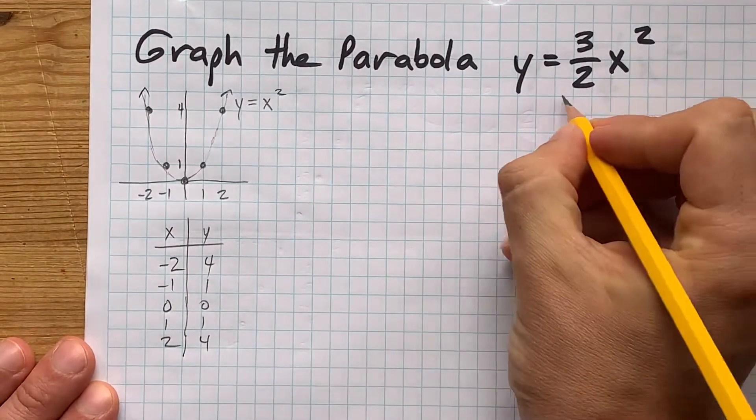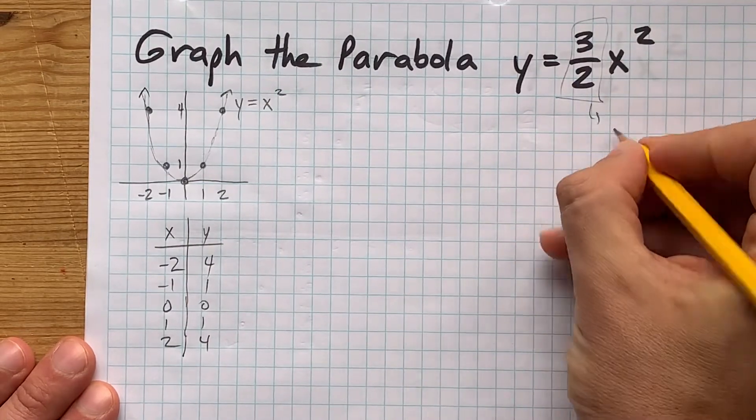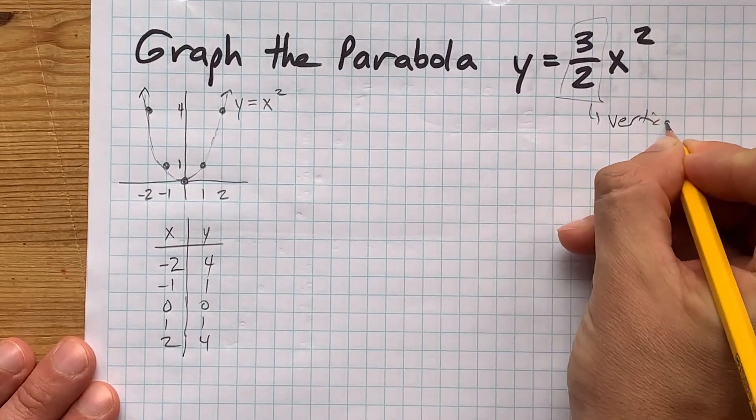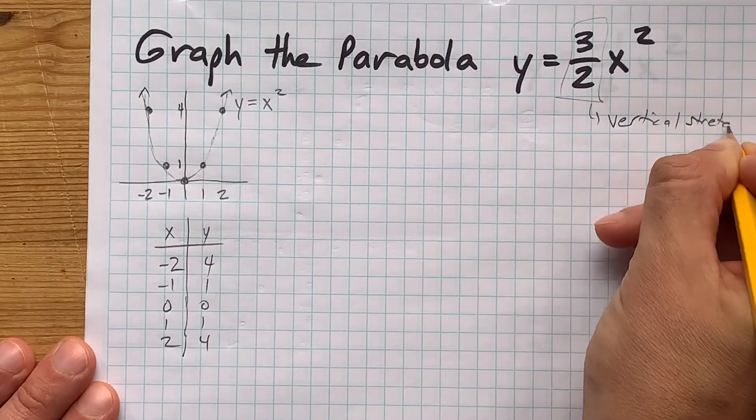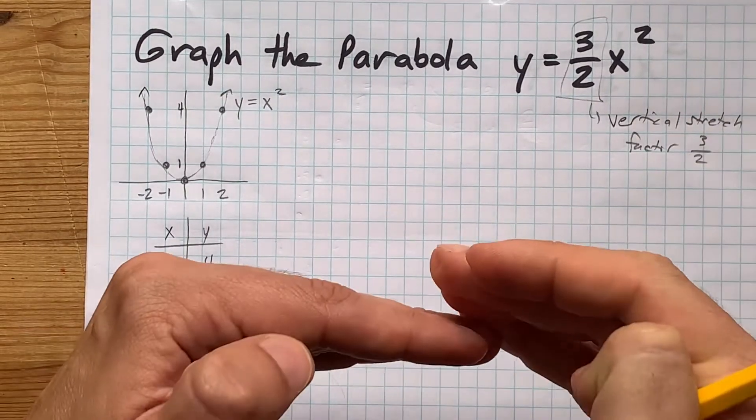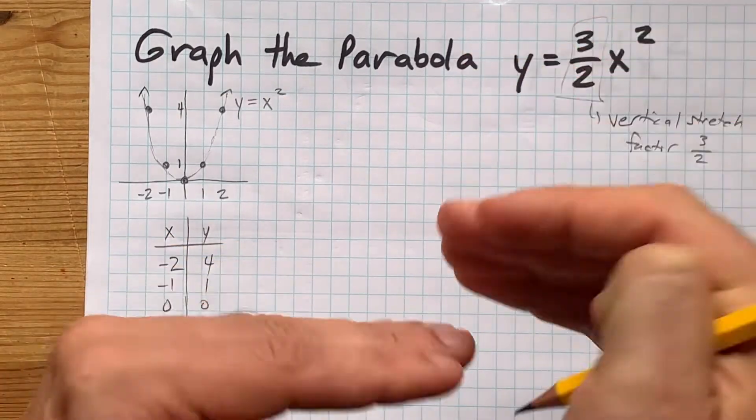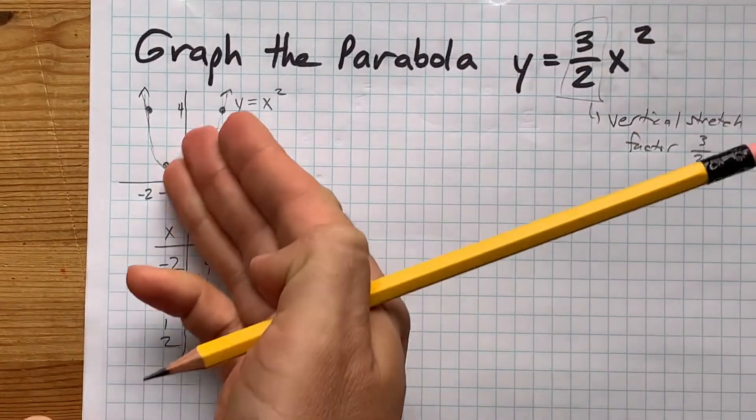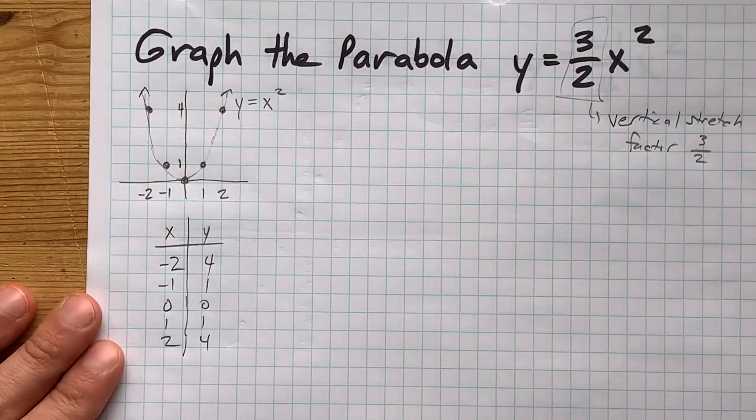What's the effect of this 3 halves? It is a vertical stretch by a factor of 3 halves, or 1.5. You are going to be 1.5 times taller than in the base curve.